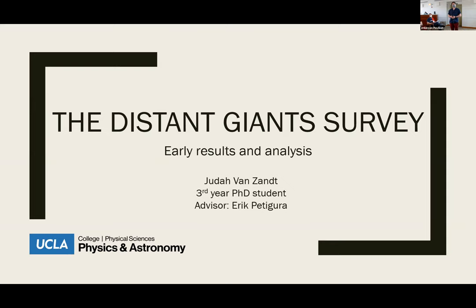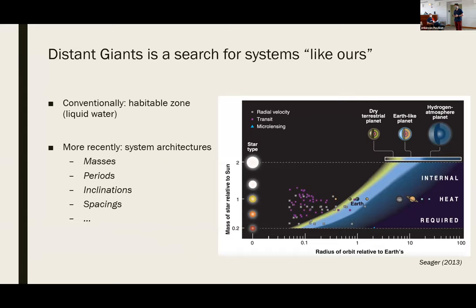If you'd like more details on TKS, it will be the subject of Ashley Chanto's talk later today. For Distant Giants in particular, broadly speaking, it is a search for exosystems that resemble our own solar system, but it's not immediately clear what it means for a system to resemble our own. So the question is: what are the key characteristics?